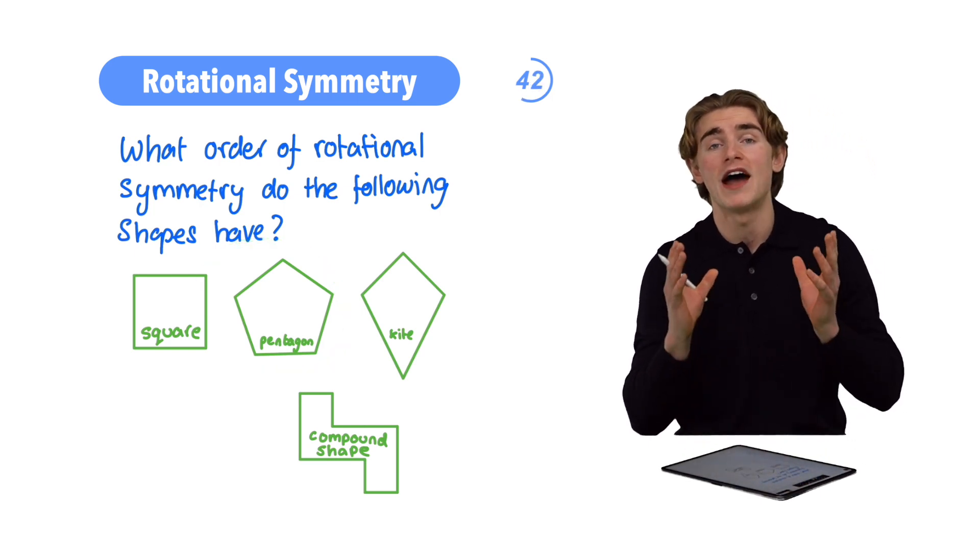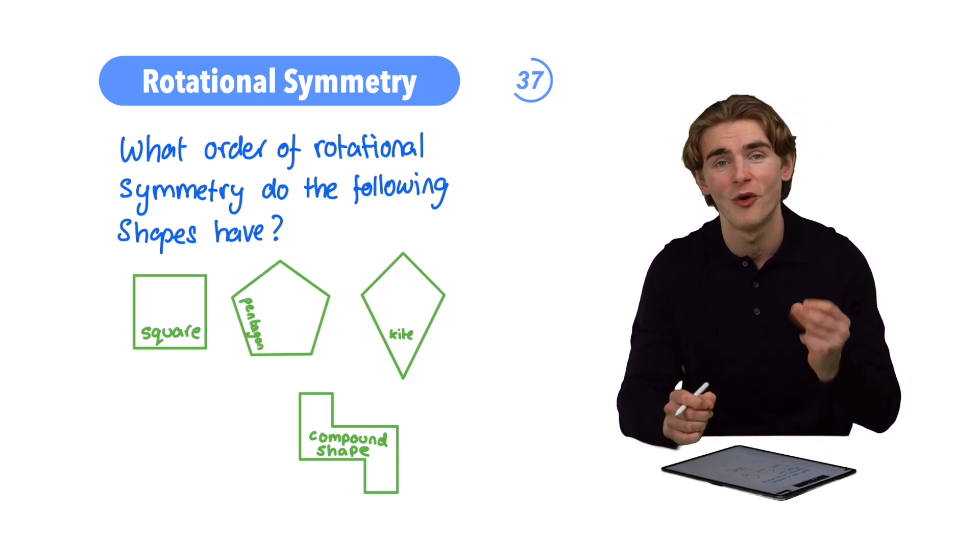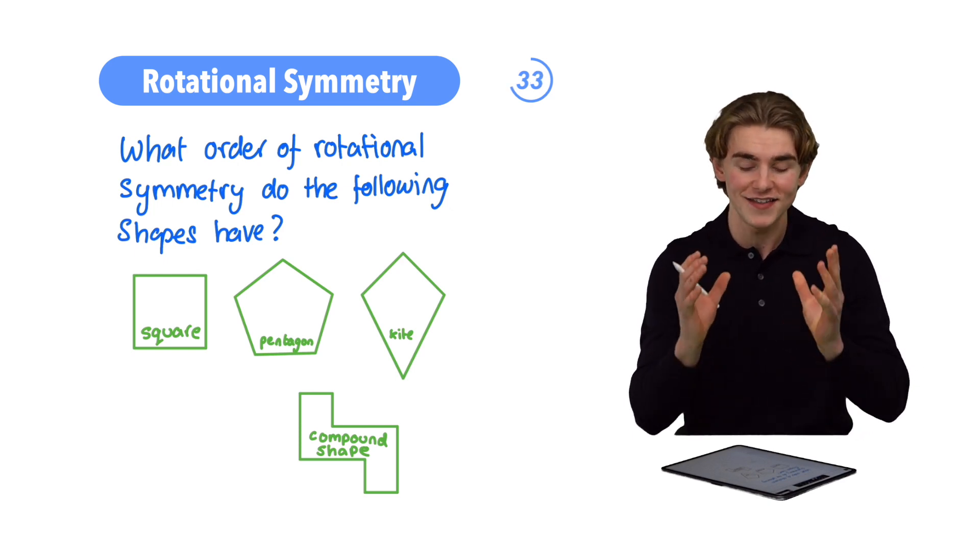And what about our pentagon? A pentagon, we would say, would have rotational symmetry of order five, and that's because there are going to be five different rotations, one, two, three, four, and five, which look exactly the same.